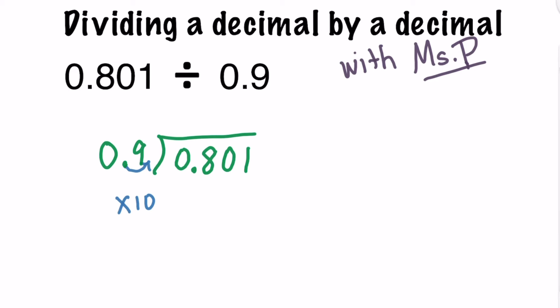But remember, we have to do the same thing with the dividend, or the number inside, as we did with the number outside. So we're going to have to take the dividend and multiply that by one power of 10 as well. And we're going to move this decimal point one place to the right, and shift the numbers to create the new dividend of 8 and 1 hundredth.